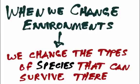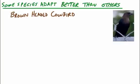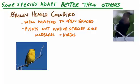An example is the brown-headed cowbird. It adapts well to open spaces and starts to push out the natural species in the area. It lays its eggs in the nests of warblers and vireos. The baby brown-headed cowbirds are louder, eat more, and grow faster, pushing out the chicks of warblers and vireos from the nests. So warblers and vireos can't survive in the environment as well.